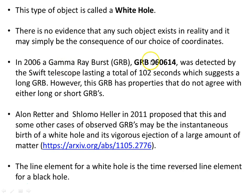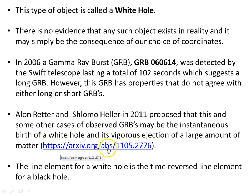However, they may actually exist. In 2006 a gamma-ray burst, GRB 060614, was detected by the Swift telescope lasting 102 seconds, suggesting a long GRB. However, this GRB has properties that do not agree with either long or short GRBs. Two researchers, Alon Retter and Shlomo Heller, in 2011 proposed that this and some other observed GRBs may be the instantaneous birth of a white hole and its vigorous ejection of a large amount of matter. A link to their paper will be in the description.